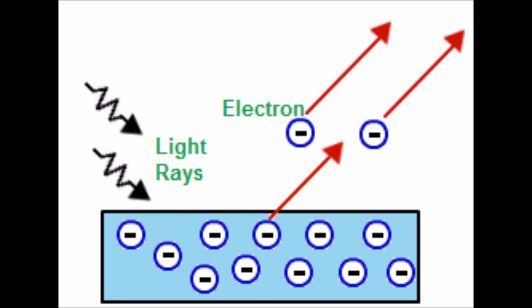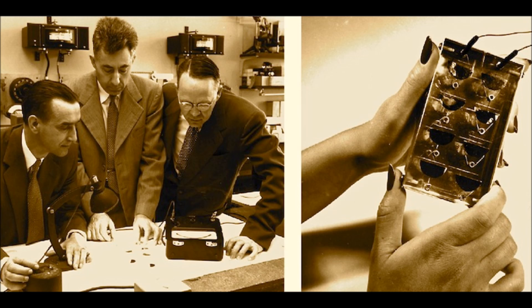In 1839, a scientist named Edmund Becquerel discovered the photoelectric effect, which says that some materials give off sparks of electricity when they're struck with sunlight.